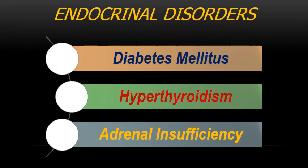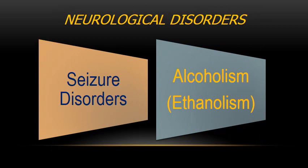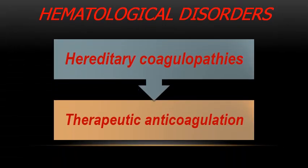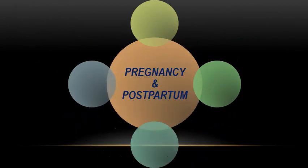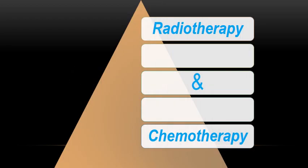For endocrinal disorders, we have diabetes mellitus and disorders of the thyroid gland — hyperthyroidism and hypothyroidism — and adrenal insufficiency. For neurological disorders, we have two main entities: seizure disorders, epilepsy, and alcoholism. Under hematological disorders, we have hereditary coagulopathy such as hemophilia, and therapeutic anticoagulation — patients who are taking anticoagulants. Then we come to pregnancy and postpartum patients, and last but not least, radiotherapy and chemotherapy.